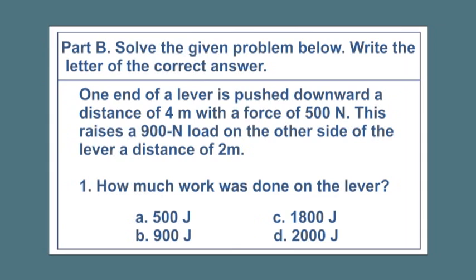Number 1, how much work was done on the lever? A, 500 joules. B, 900 joules. C, 1,800 joules. D, 2,000 joules.